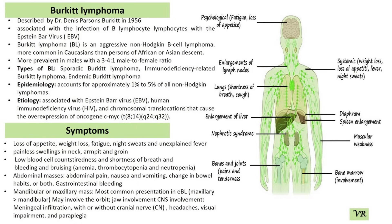The first exon is non-coding. MYC encodes a protein that regulates the expression of various genes by binding to specific DNA sequences and influencing the transcription of genes involved in cell proliferation, metabolism, and other cellular processes. MYC also promotes cell cycle progression, which is crucial for normal cell division and growth.